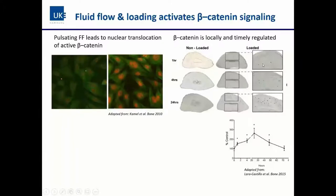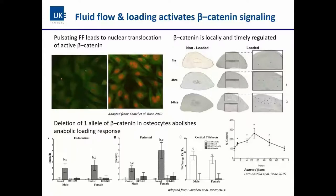Beta-catenin activation is both locally and temporally regulated upon loading. Work by Lara-Castillo showed this in the ulnar forearm loading model, where blue dots indicate beta-catenin in osteocytes of TopGal mice, with a time course of 1 to 24 hours showing differential expression. Furthermore, if one allele of beta-catenin is abolished in osteocytes using a DMP1-Cre driver, the anabolic loading response is completely abolished — seen both at endocortical and periosteal surfaces and in cortical thickness — independently of sex in both male and female mice.